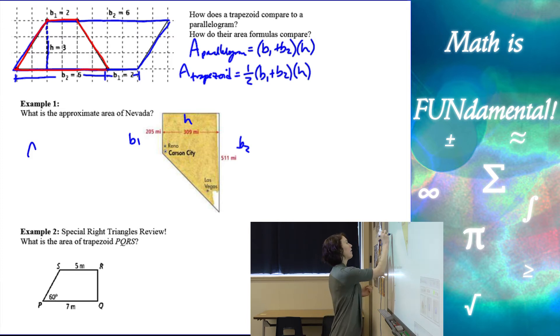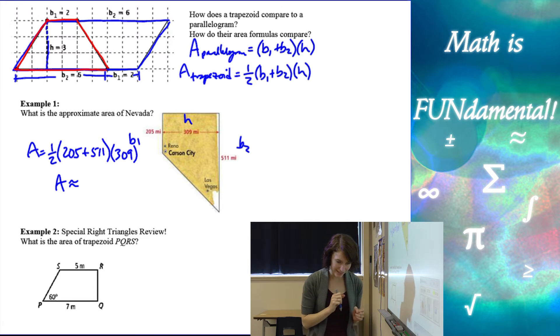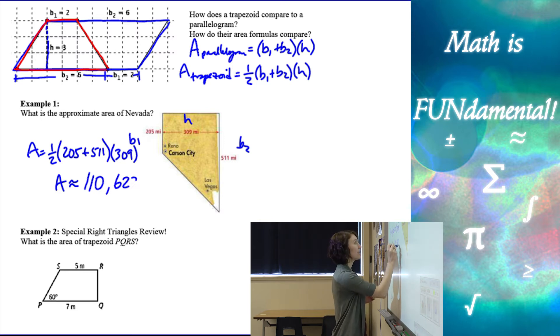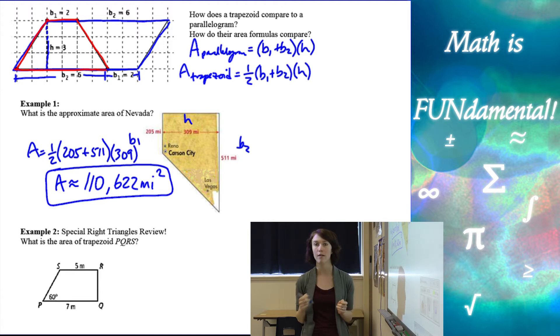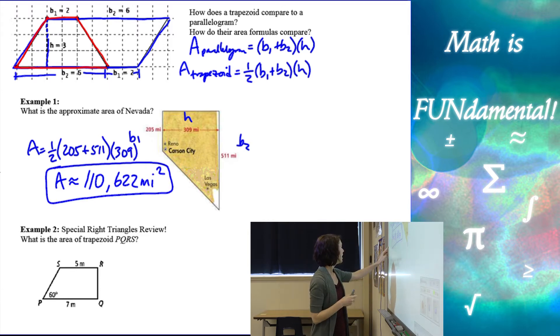So my area would be one half of 205 plus 511, and then times our height, which is 309. And using our calculators and approximating that area, we should get approximately 110,622, and our units are miles, and area always has square units. So we should have square miles there.